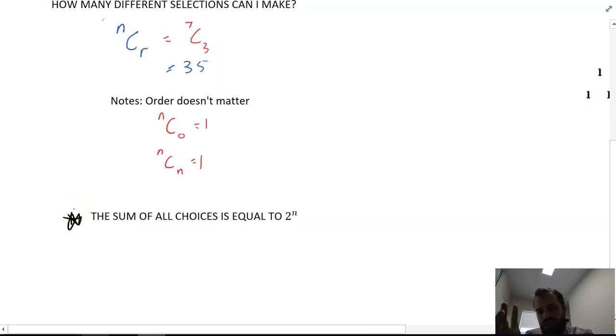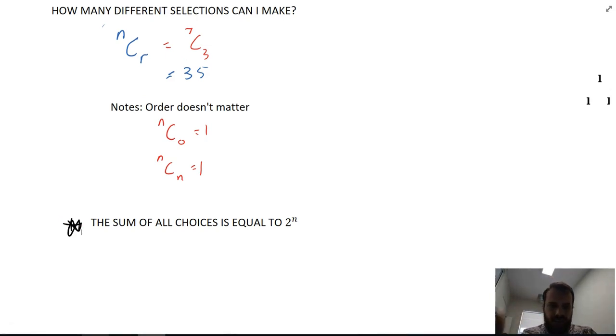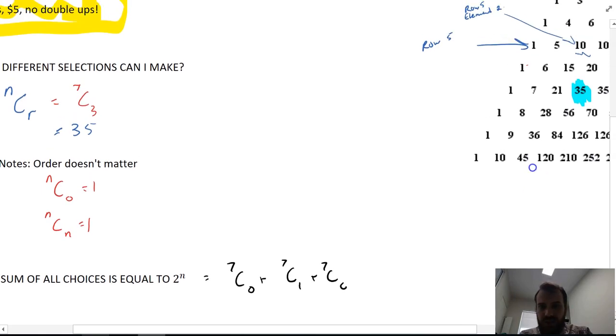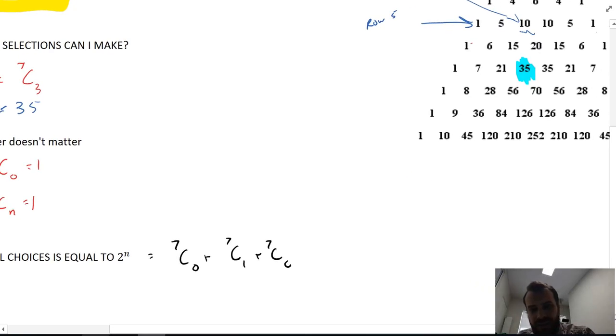The sum of all choices is equal to two to the power of n. So let's say that you went to this ice cream shop, and you could choose. You could say, I want zero flavors, I want one flavor, I want two, I want three, I want four, I want five, I want six, I want seven. And those were all of your options. And the question is, how many different selections could you make then? Well, the number of selections you could make would be, there's seven things to choose from. So seven choose zero. You could choose to have no flavors. You could do seven choose one, which is just going to be equal to seven, because you've got seven flavors to choose from. You could do seven choose two, which is just going to be the second element of row seven, which is 21. And you can continue on like this until you hit seven choose seven.